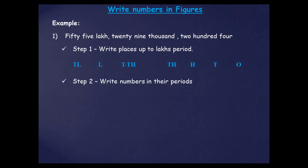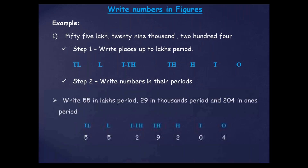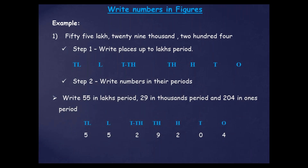What will you do next? You will write the numbers in their periods. 55 lakh will be written as 5, 5. 29,000 will go — 29 means 2, 9 — it will go in the thousand period. And 204 — we know how to write 204 — 204. So 5 at 10 lakh, 5 at lakh, 2 at 10,000, 9 at the thousand place, 2 at the hundred place, 0 at the tens place, and 4 at the ones place.